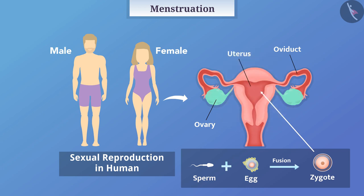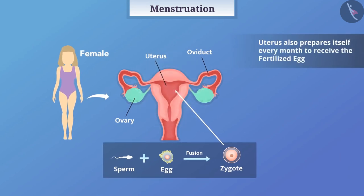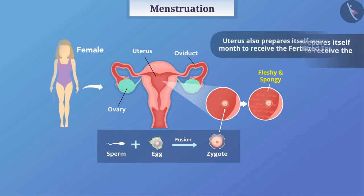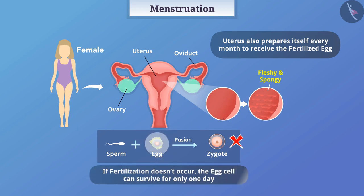Therefore, the uterus also prepares itself every month to receive the fertilized egg. Its lining becomes fleshy and spongy so that the fetus receives nourishment. But in case fertilization doesn't occur, the egg cell can survive only for one day.